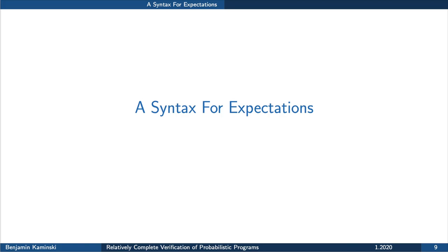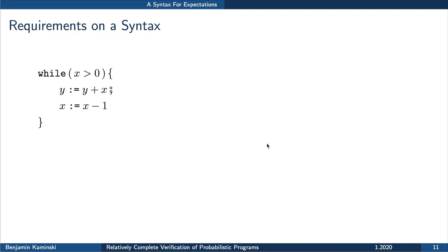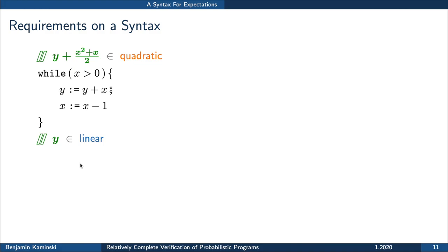I will now show you the syntax we have developed for expectations. We want a syntax such that whenever we start with a post expectation F in this syntax, the syntax is closed under taking weakest pre-expectations. Here are requirements — a wish list. Consider a program (not even probabilistic): we want to know what value to expect for Y after executing it. The answer turns out to be Y plus X squared plus X cubed. We see we go from something linear to something quadratic or cubic, so a syntax of only linear functions does not suffice — we need at least polynomials.